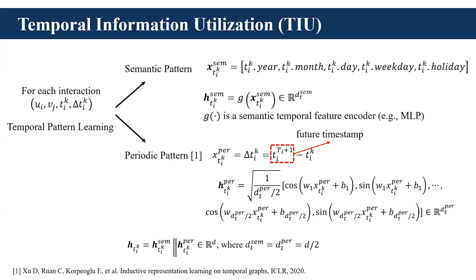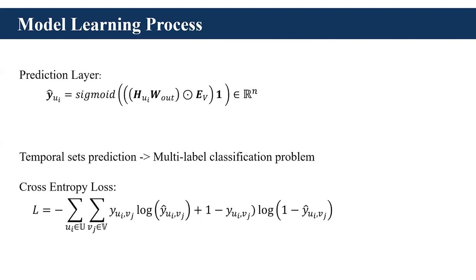We incorporate the temporal encoding into the message aggregation process to make the model aware of temporal information. We also use a hyperparameter lambda to control the importance of temporal information. Finally, after obtaining the representation of users on multiple hops, we compute the probabilities of each element appearing in the next set of each user via the prediction layer. We treat temporal set prediction as a multi-label classification problem, adopt cross-entropy loss as the objective function, and optimize the model by back propagation.